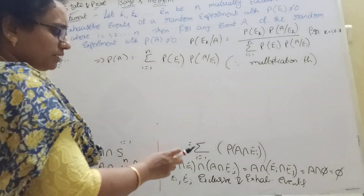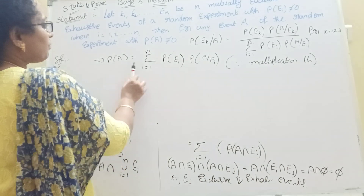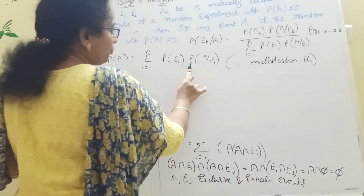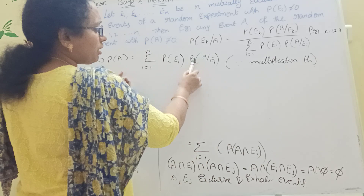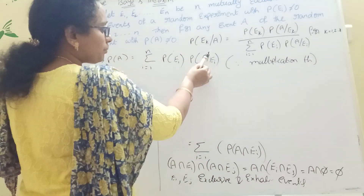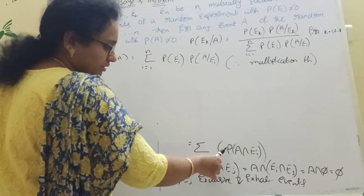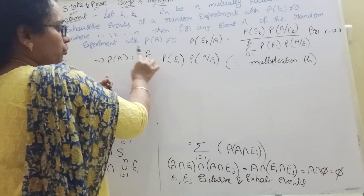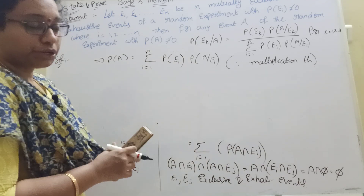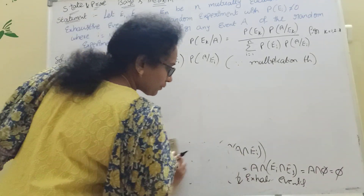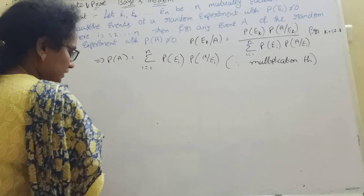A intersection E1, P of E1. This is the multiplication theorem. We have the multiplication theorem, and then P of A intersection E2, P of A given E2. P of Ek times — sigma i equal to 1 to n, P of Ei and P of A given Ei — multiplication theorem. So conditional probability. We have the multiplication theorem and conditional probability.